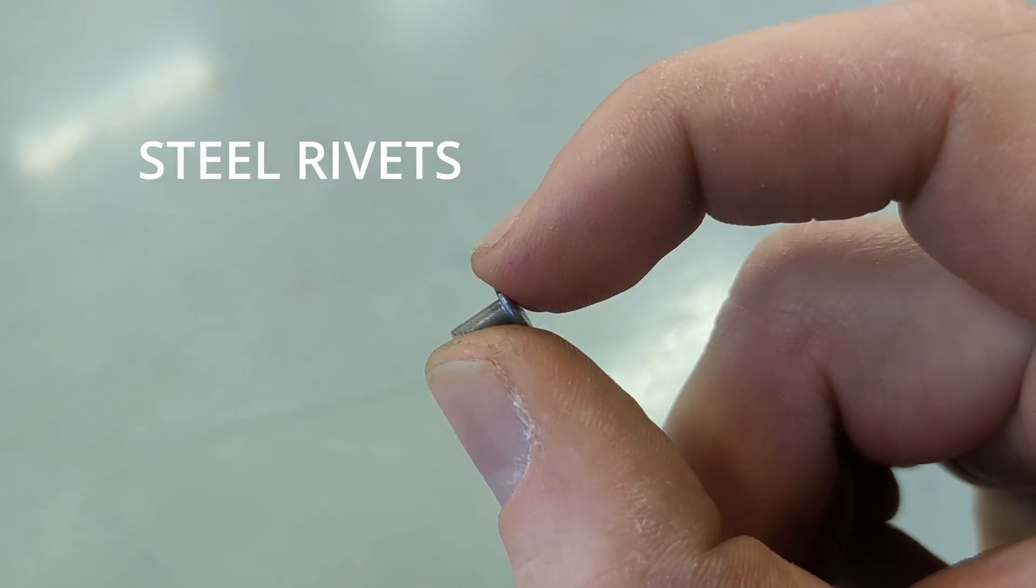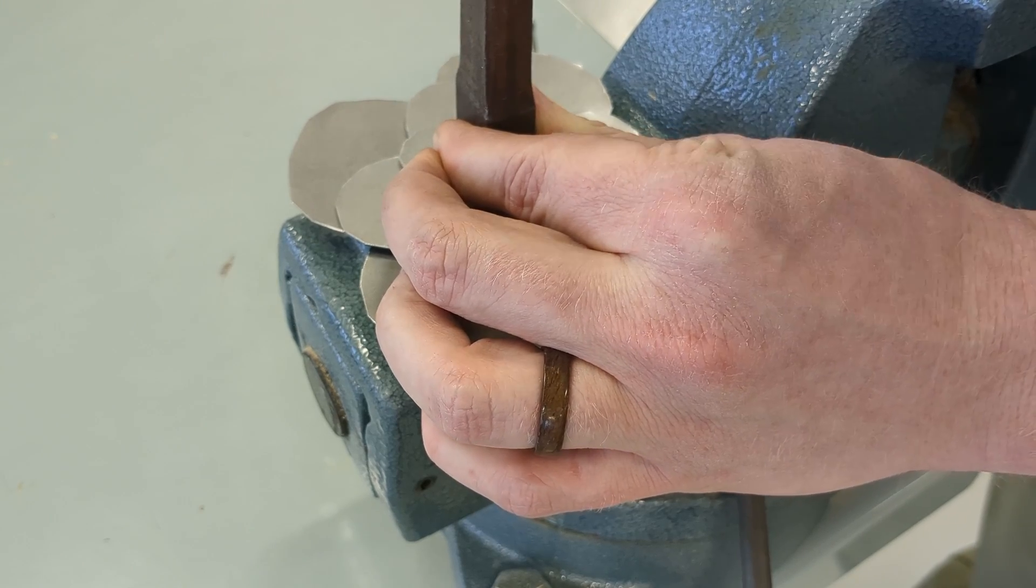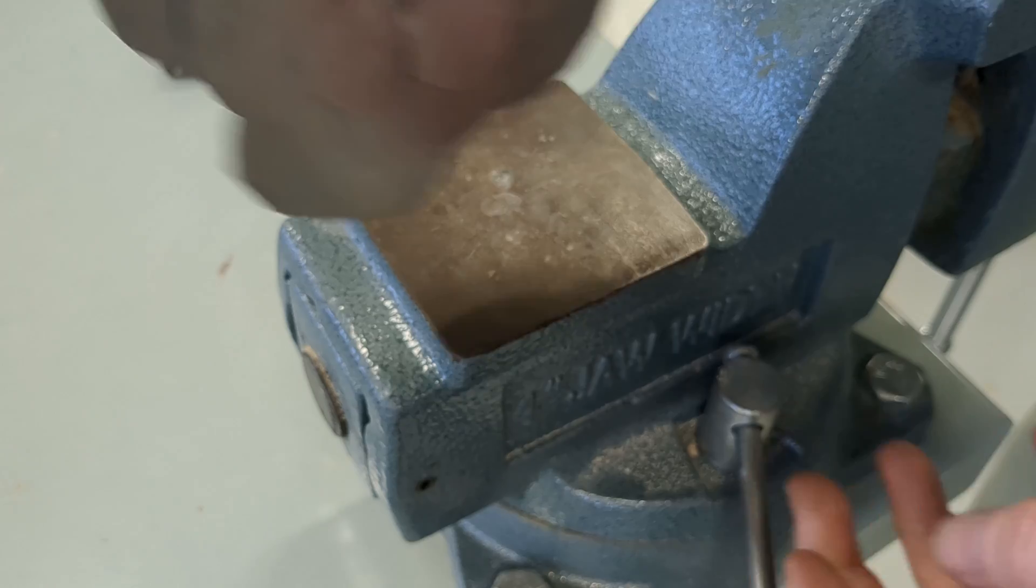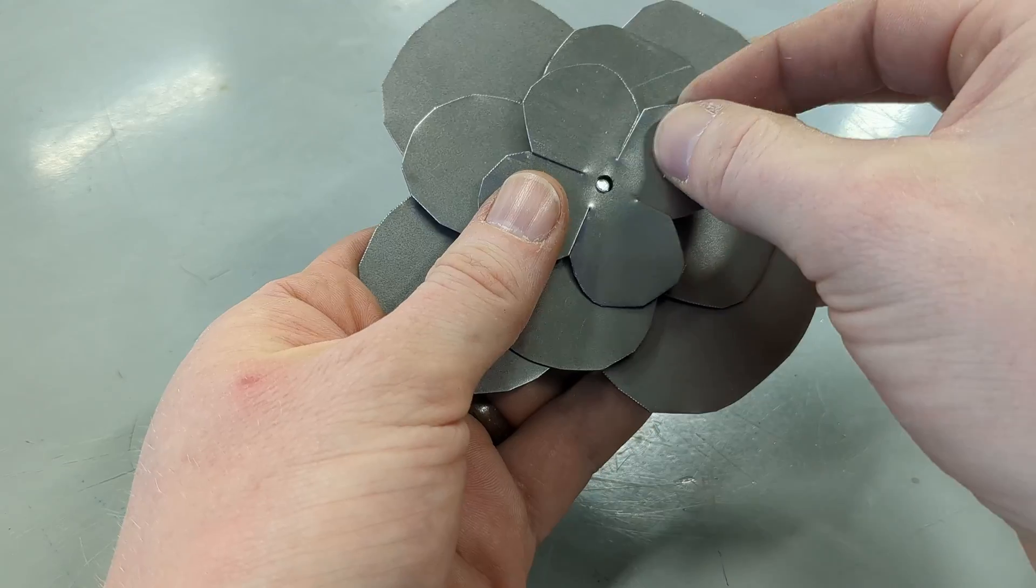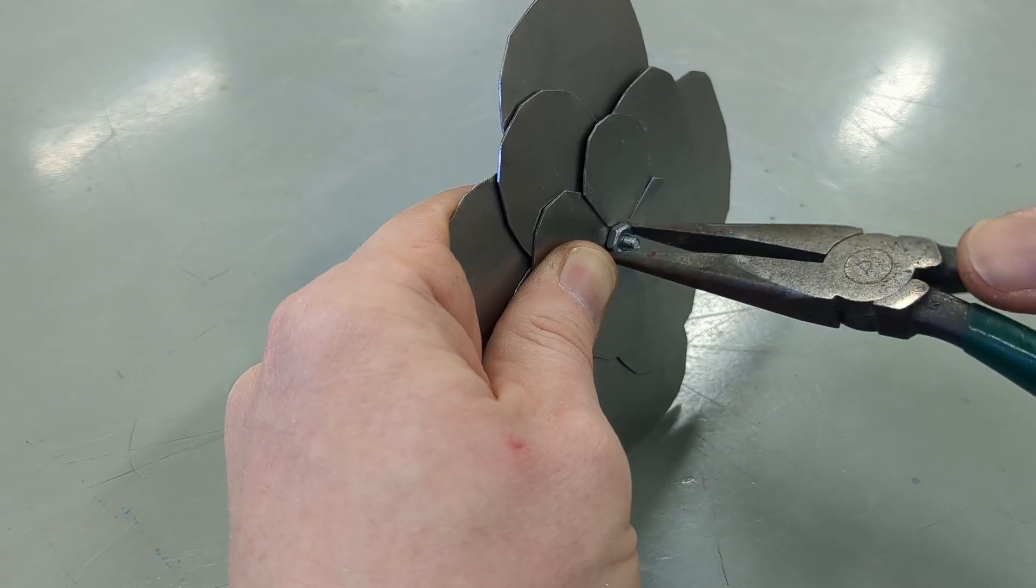Another method you could use is just steel rivets. Once you have your holes drilled, the only extra tool you would need here is a hammer, preferably a ball peen hammer, and it's nice if you have a rivet setter, but it's not needed. If you don't even have a hammer, you could just use machine screws and nuts. After you drill your hole, you don't need any extra tools for this method.